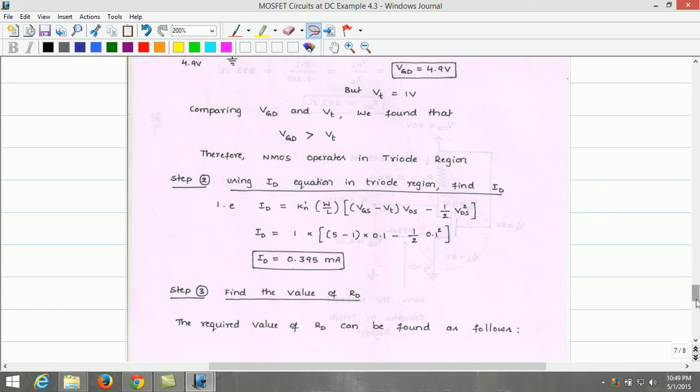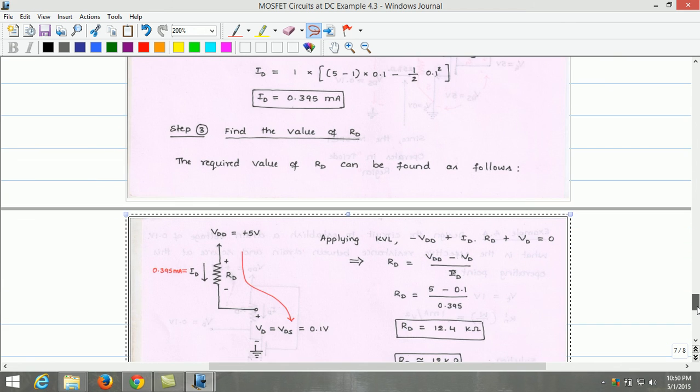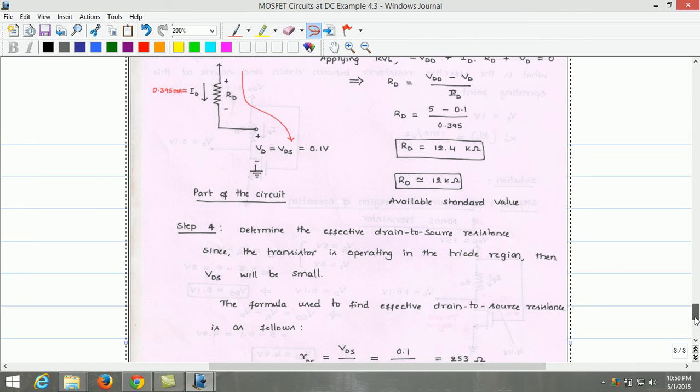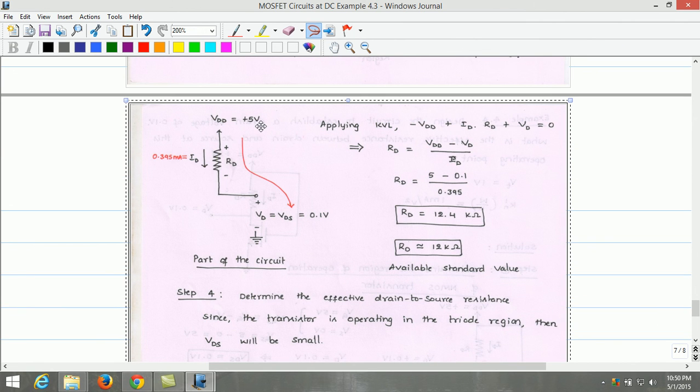In step 3, we will estimate the RD value. The required value of RD from the circuit can be calculated as follows. The portion of the circuit to find the RD value is as shown here. VDD is 5 volt, RD which we need to estimate, VD or VDS equals 0.1 volt.